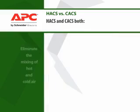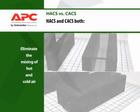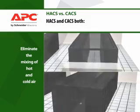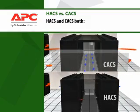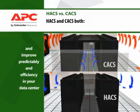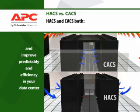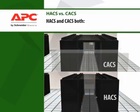Both the Hot Aisle and Cold Aisle Containment Systems eliminate the mixing of hot and cold air. By keeping these air streams separate, the cooling system can run with more predictability and efficiency.